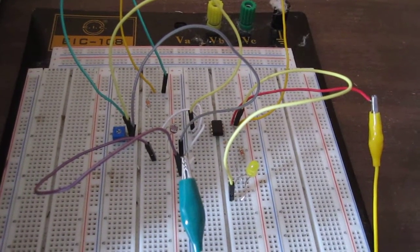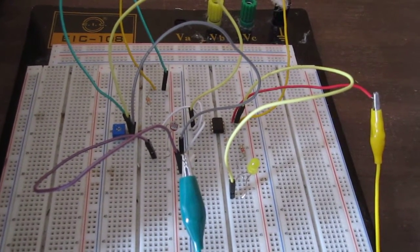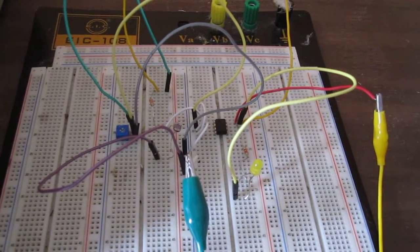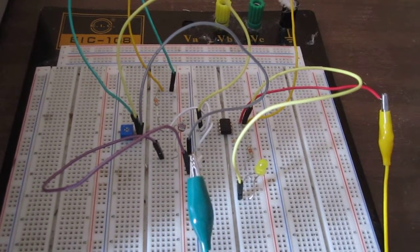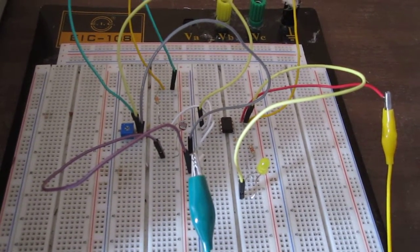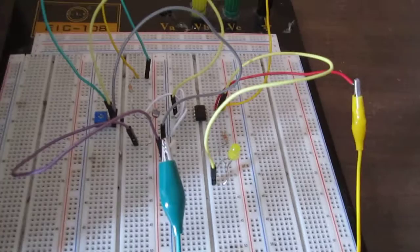Hey guys, this is the LM311 voltage comparator circuit. This circuit functions as a nightlight circuit, meaning that when the circuit detects darkness, the output turns on.